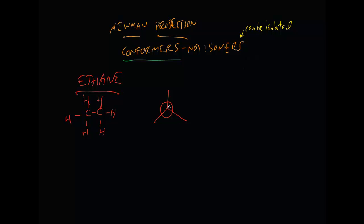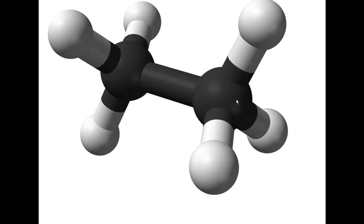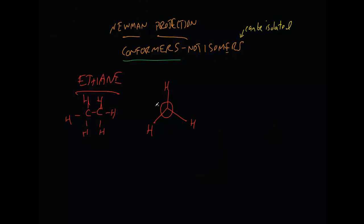That dot represents the front carbon when looking directly straight-on. We draw the three hydrogens coming off that front carbon — there are three hydrogen atoms on the front carbon. Now, looking straight ahead, I can't see the second carbon behind it.